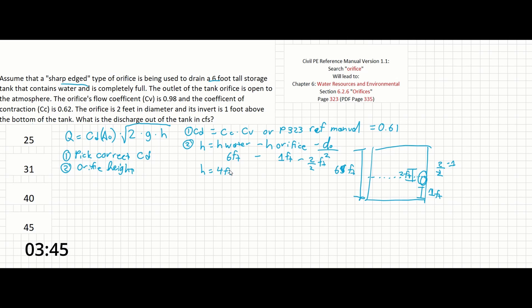And now what we have to do is plug all of our knowns into the equation. So we can say Q equals 0.61 times the area of the orifice. Let's calculate that real fast. A0 equals pi d squared over 4 equals pi 2 feet squared over 4 equals 3.14 feet squared.